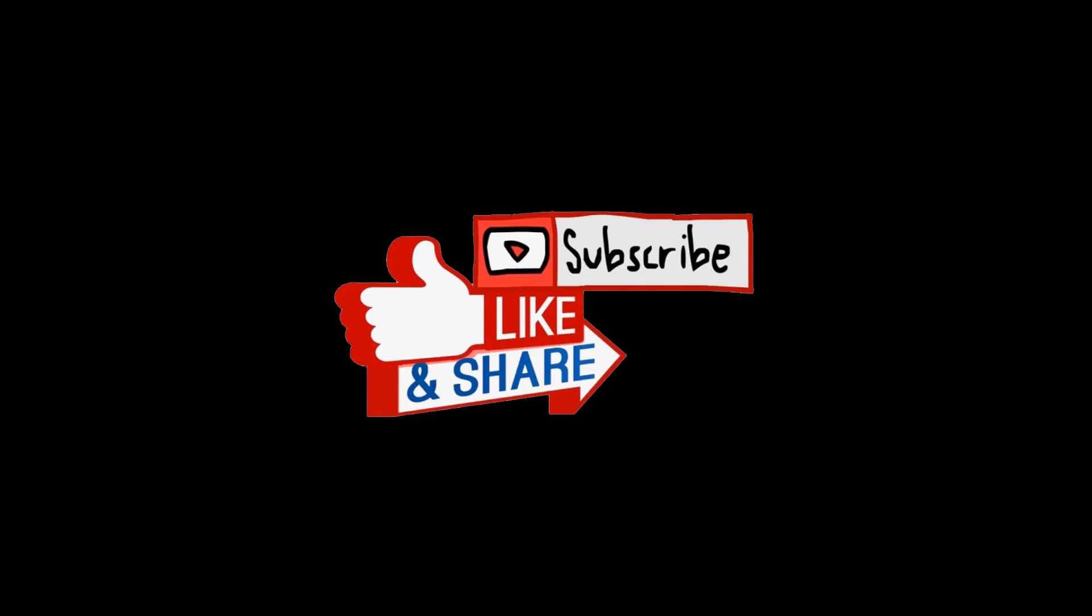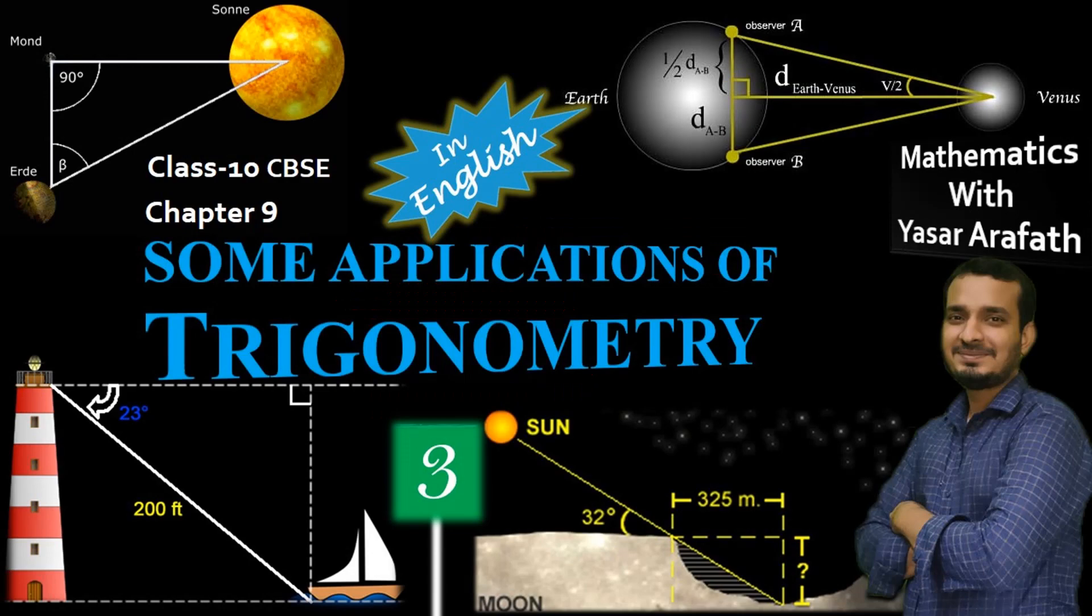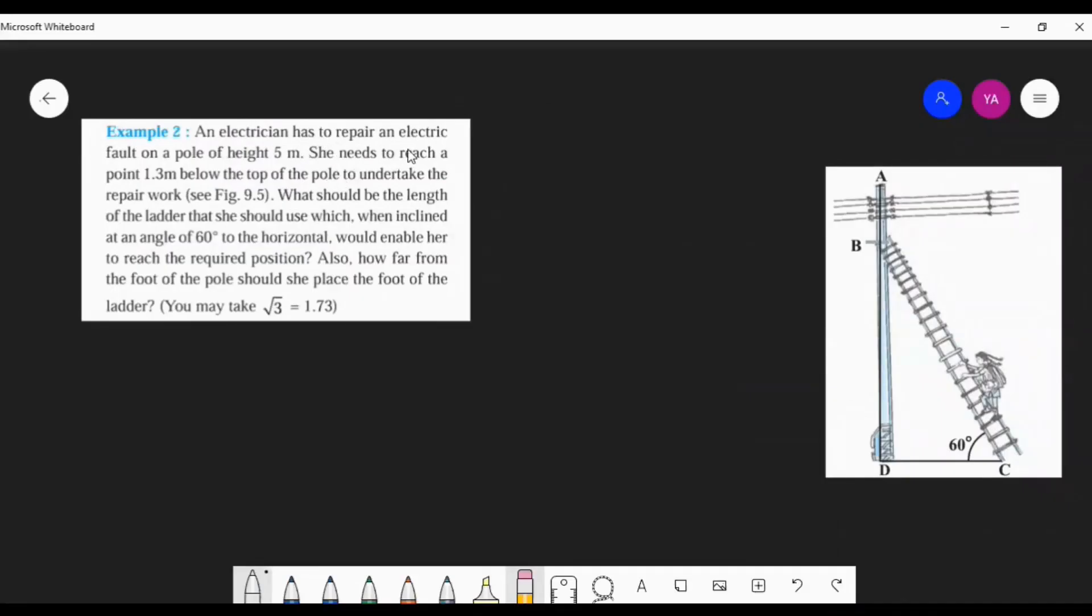Let's move to the question. An electrician has to repair an electric fault on a pole of height 5 meter. She needs to reach a point 1.3 meter below the top of the pole to undertake the repair work. What should be the length of the ladder that she should use, which when inclined at an angle of 60 degree to the horizontal, would enable her to reach the required position? Also, how far from the foot of the pole should she place the foot of the ladder?